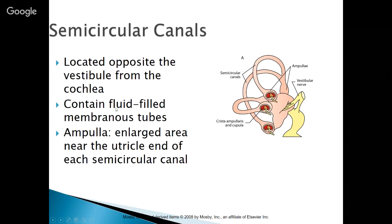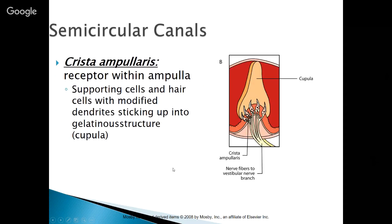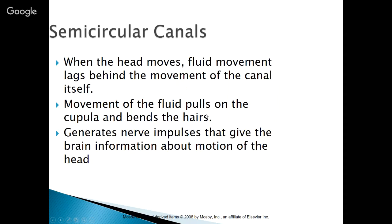The semicircular canals are located in the inner ear, opposite the vestibule from the cochlea. They contain fluid-filled membranous tubes with enlarged areas called ampullae near the utricle end of each canal. Within each ampulla is the crista ampullaris, a receptor with supporting cells and hair cells with modified dendrites that stick up into a gelatinous structure called the cupula. When the head moves, fluid movement lags behind the movement of the canal itself, and that movement pulls on the cupula and bends the hairs, generating nerve impulses that give the brain information about the motion of the head. It's all physics.